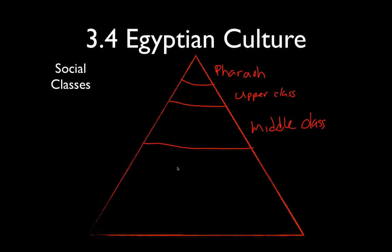The largest section at the bottom is your peasants. They weren't called lower class — just peasants at this time. These were pretty much anybody who wasn't in the three classes above, including your farmers.